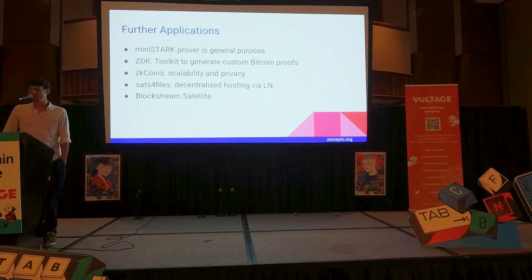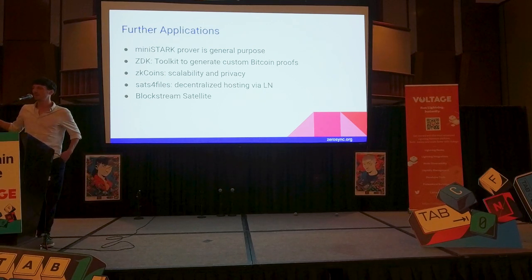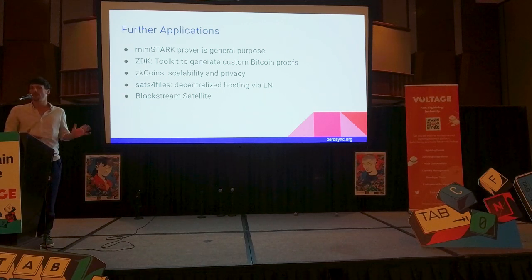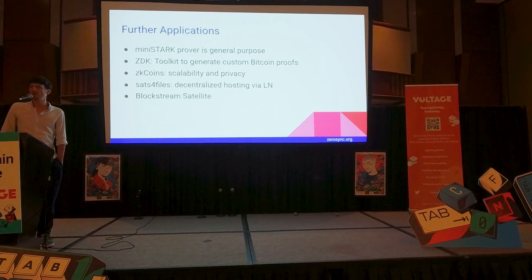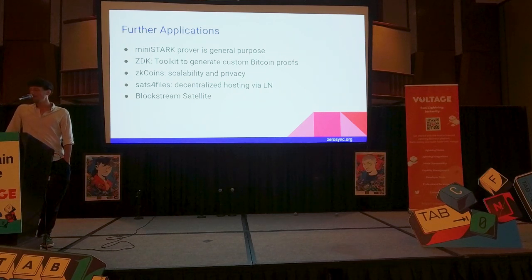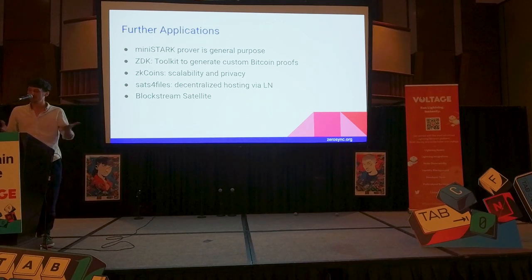Another thing we have been working on is trustless file sales by Lightning, which is decentralized file hosting via Lightning. It basically allows you to trustlessly purchase files via Lightning — a server encrypts a file, and then you buy the pre-image of a Lightning HTLC to decrypt it, and you can be certain of the decryption. We are also working with Blockstream, who are running this cool blockchain satellite thing where you can sync the chain from outer space — all you need is a satellite dish with no internet. That's why it's a great match for chain-sync proofs: it's way more awesome to just broadcast the chain-sync proof instead of the full 5 GB blockchain.